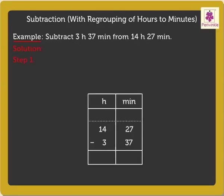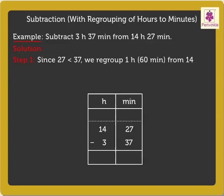Step 1: Since 27 is less than 37, we regroup 1 hour, that is 60 minutes, from 14 hours.